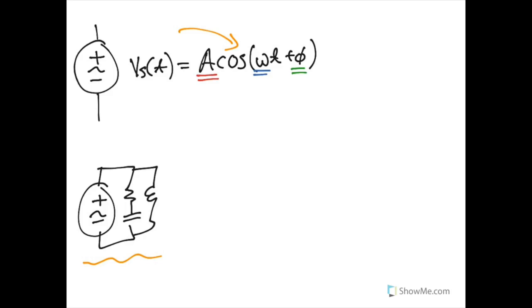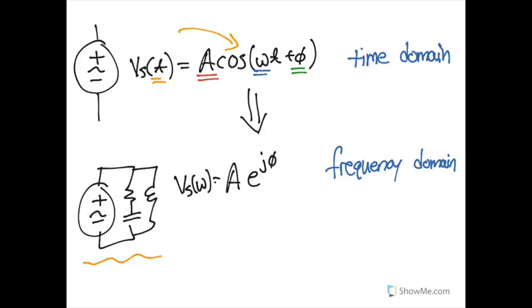So what we're going to talk about today is how we're going to transform a signal that is in the time domain and move it into an equivalent but different kind of signal that we're going to call a phasor that is in the frequency domain. Our function is no longer going to be of time, but actually a function of frequency.